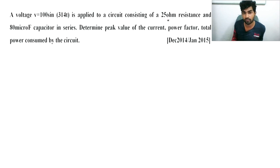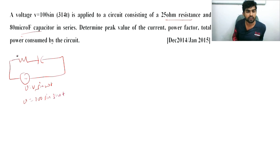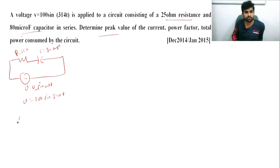Next problem: a voltage v = 100 sin(314t) is applied to a circuit consisting of 25 ohm resistance and 80 microfarad capacitor in series — definitely an RC series circuit connected across AC supply. The supply is in the format v = Vm sin(ωt), so Vm = 100, ω = 314, R = 25 ohm, C = 80 microfarad. We need to find: peak value of current Im, power factor, and power.